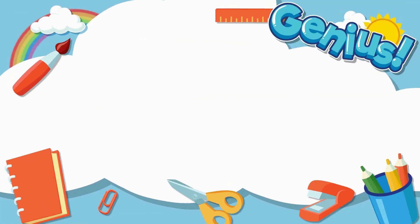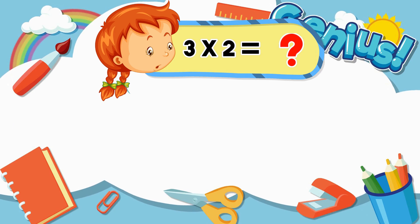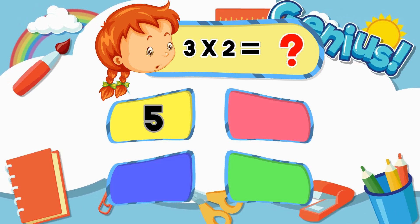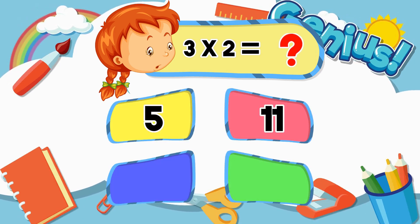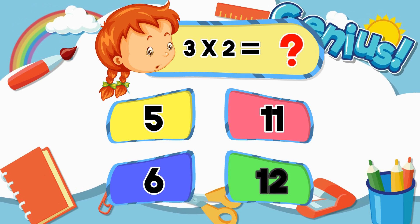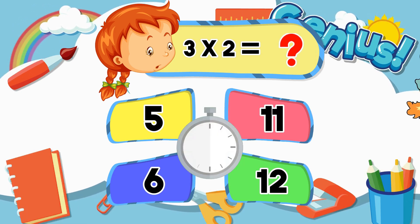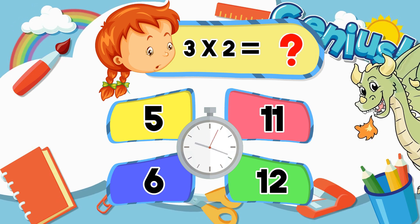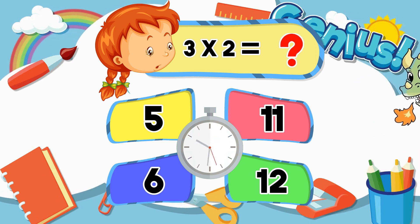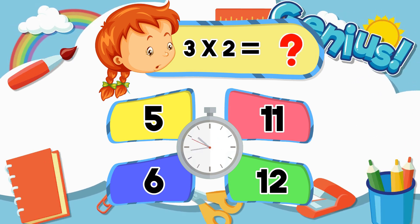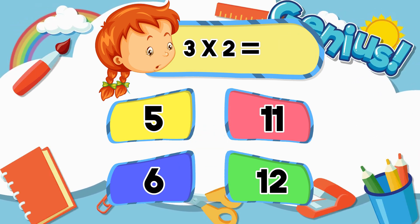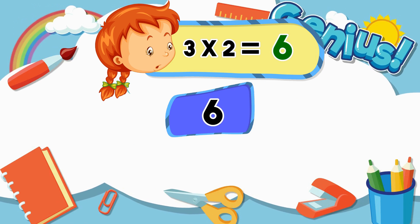What is 3 times 2? 5, 11, 6, 12. [Answer:] 6.